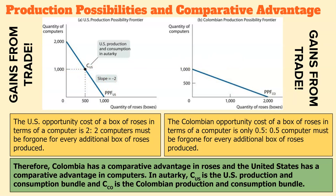Colombia has the comparative advantage in roses because it has the lower opportunity cost in roses. The U.S. has a comparative advantage in computers because it has a lower opportunity cost in computers. A great way to double-check your work when calculating comparative advantage is to look at the slope of the curve — the slope is leaning towards computers for the U.S. and leaning towards roses for Colombia, telling us they have the lower opportunity cost and thus the comparative advantage in those spaces.